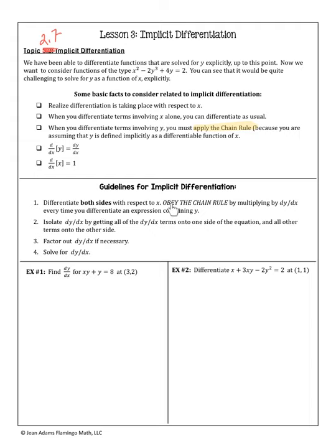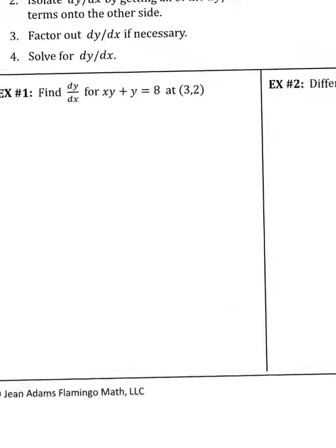Here are the guidelines for solving equations using implicit differentiation. First, differentiate both sides with respect to x — obeying the chain rule is critical. Then isolate any terms that have a dy/dx on the left side of the equation, and move every other term to the right. Factor out the dy/dx from terms on the left and divide both sides by what's left over. You'll have solved for dy/dx. This will make more sense in example one.